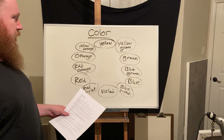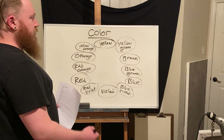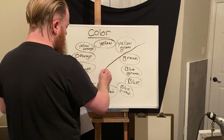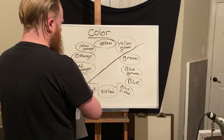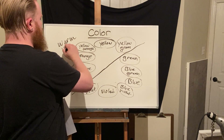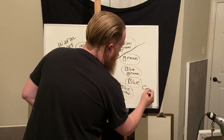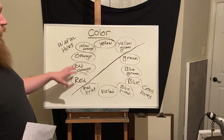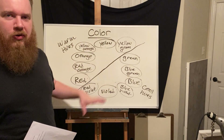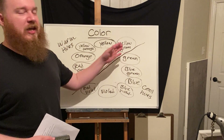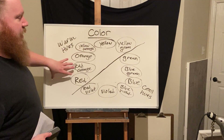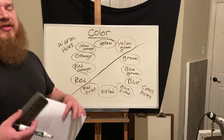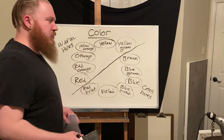It's also important to note the difference between cool and warm hues. Warm hues include red, red-orange, orange, yellow-orange, yellow, and yellow-green. Cool hues include red-violet, violet, blue-violet, blue, blue-green, and green. We perceive the warm half of the color wheel as vibrant and energetic, whereas we perceive the cool half as somber and subdued.